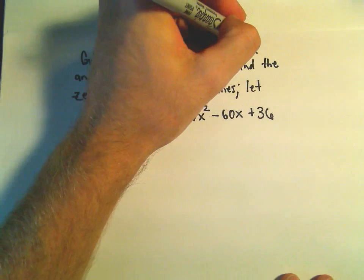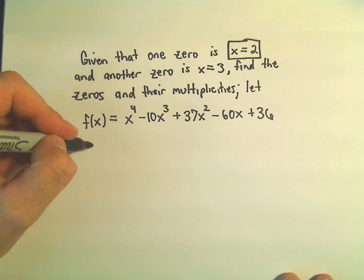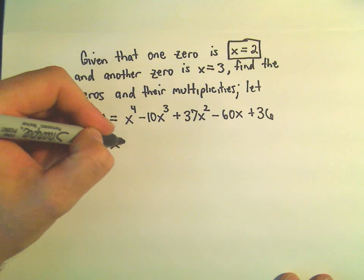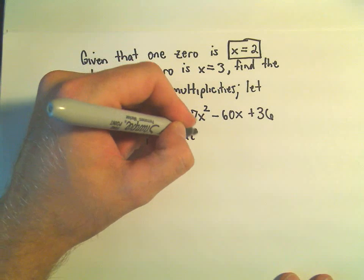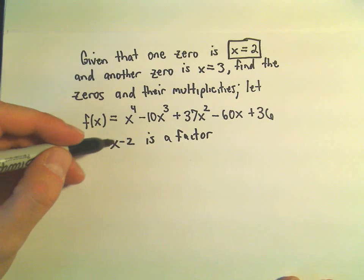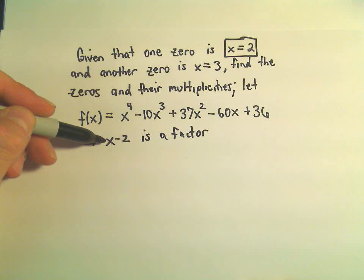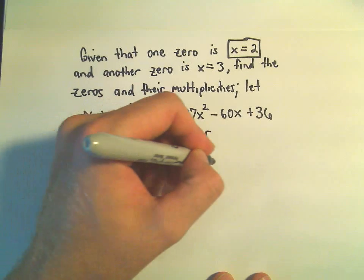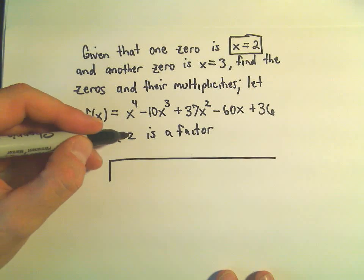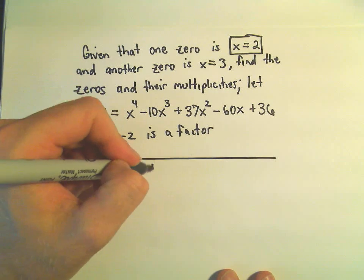So I'm going to use this first bit of information that x equals 2 is a zero. Since x equals 2 is a zero, that means that x minus 2 is a factor. And that means if we do long division with x minus 2, if we divide our polynomial f of x by x minus 2, we'll find the other factor. And instead of doing all that long division, I'm going to use synthetic division. So I'm going to put my 2 outside and then just drop down my coefficients.